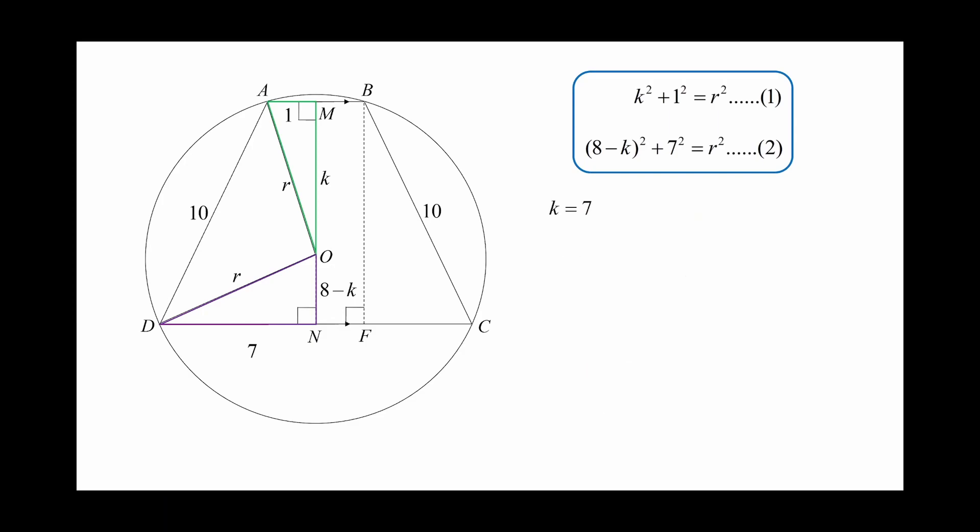Let's put this back into equation 1 to find the value of R. So R square is equal to 50. Therefore, the area of circle is equal to 50 pi.